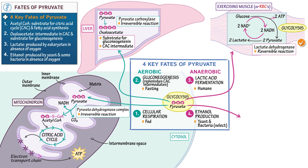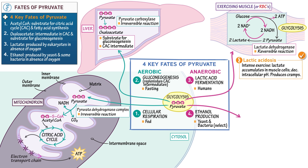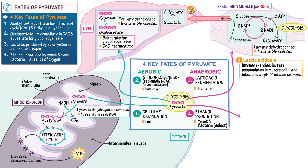Indicate that this process is catalyzed by lactate dehydrogenase and that it's reversible. It's influenced by the concentration of NADH in the cell; thus high NADH favors lactate fermentation. As a clinical correlation, intense exercise can produce lactic acidosis, in which lactate accumulates in muscle cells and causes an intracellular drop in pH, which can produce muscle cramps. Lactate can exit the muscle and enter the bloodstream, travel to the liver, where it's oxidized back to pyruvate by the same enzyme. Pyruvate can then enter gluconeogenesis or the citric acid cycle.